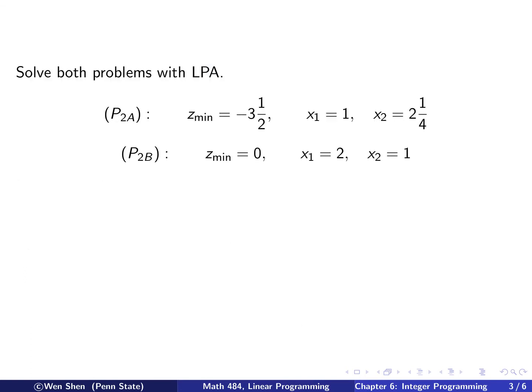Then we can solve the two problems 2a, problem 2a, and problem 2b, using LP assistance. And here's what the LP assistance gives us. For 2a, the minimum of z is negative 3.5. So at x1 is 1, x2 is 2.25. And the second one, the minimum is 0. And x1 is 2, x2 is 1.